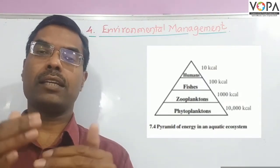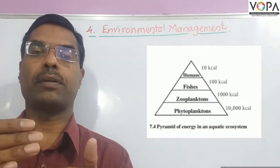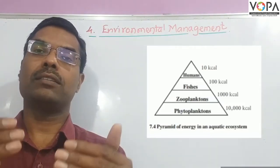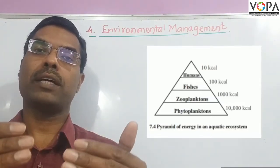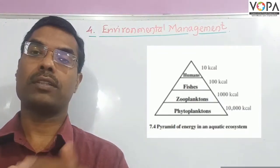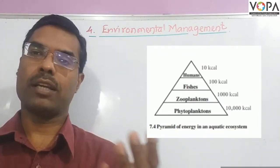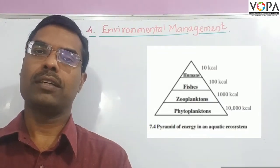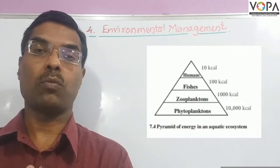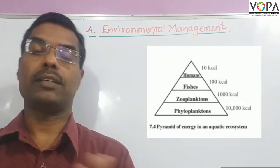In this energy transfer, 90% energy is utilized by the organisms at that trophic level — for their life processes, for performing various work, for their growth, etc.